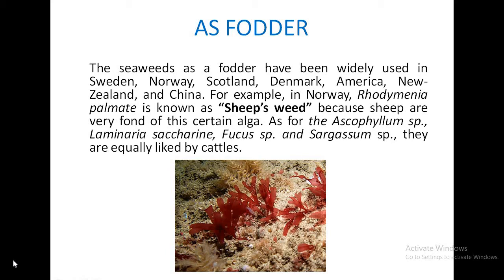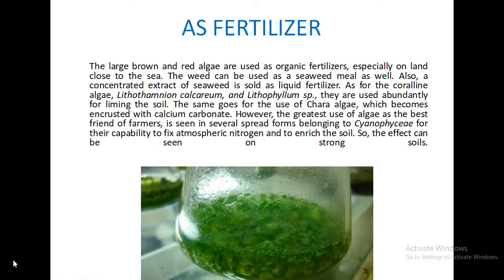Algae are also a source of fodder. Species of many seaweeds — Fucus, Laminaria, Ascophyllum, and Sargassum — are used as fodder. Rhodymenia palmata is known as the sheep weed. Algae, especially blue-green algae (BGA) — such as Nostoc, Oscillatoria, and Anabaena — possess heterocysts for nitrogen fixation.